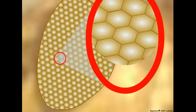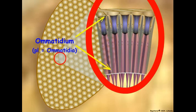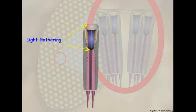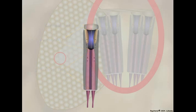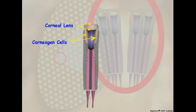Let us look at the detailed structure of an ommatidium. An ommatidium is divided into light-gathering and light-detecting components. The corneal lens is transparent cuticle that is secreted by two modified epidermal cells called corneogen cells. Corneogen cells secrete the corneal lens when new cuticle is formed at the time of the molt, and later differentiate into the primary pigment cells.